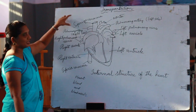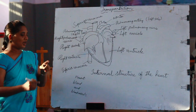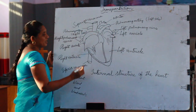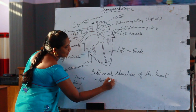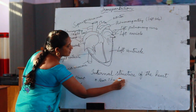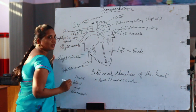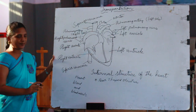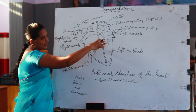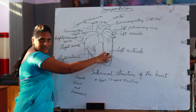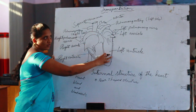Now we are going to discuss about the internal structure of the heart. Our heart is a pear-shaped structure. The outline is triangular in shape. The anterior end is wider whereas the posterior end is narrower.